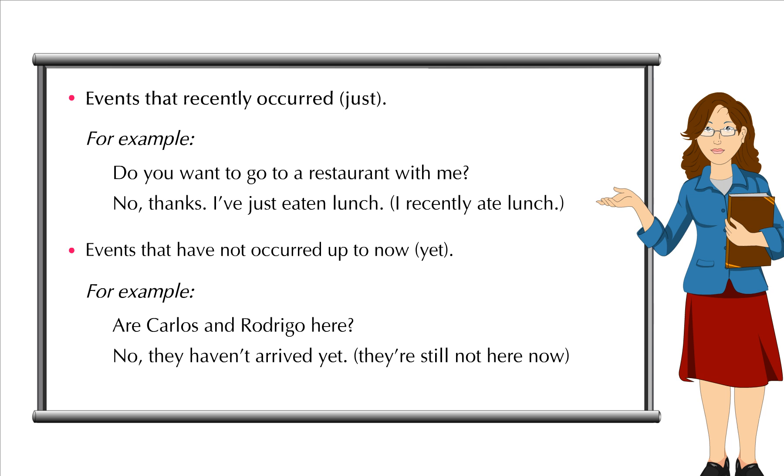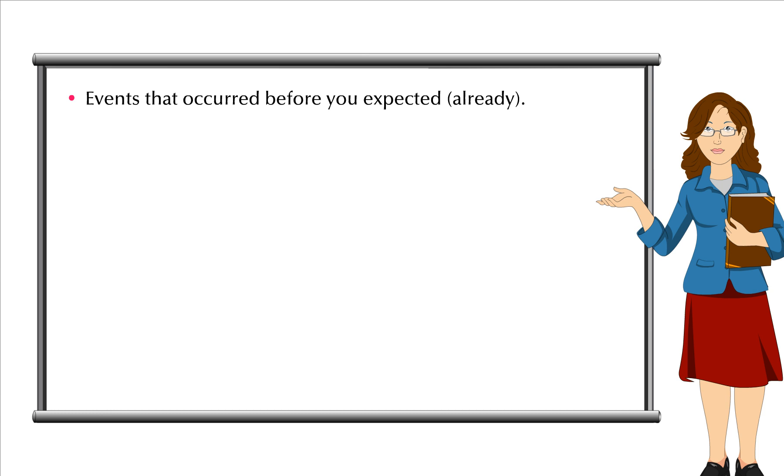They are still not here now. Events that occurred before you expected. Already! For example, I have already graduated from the university. I expected to graduate at a later date.